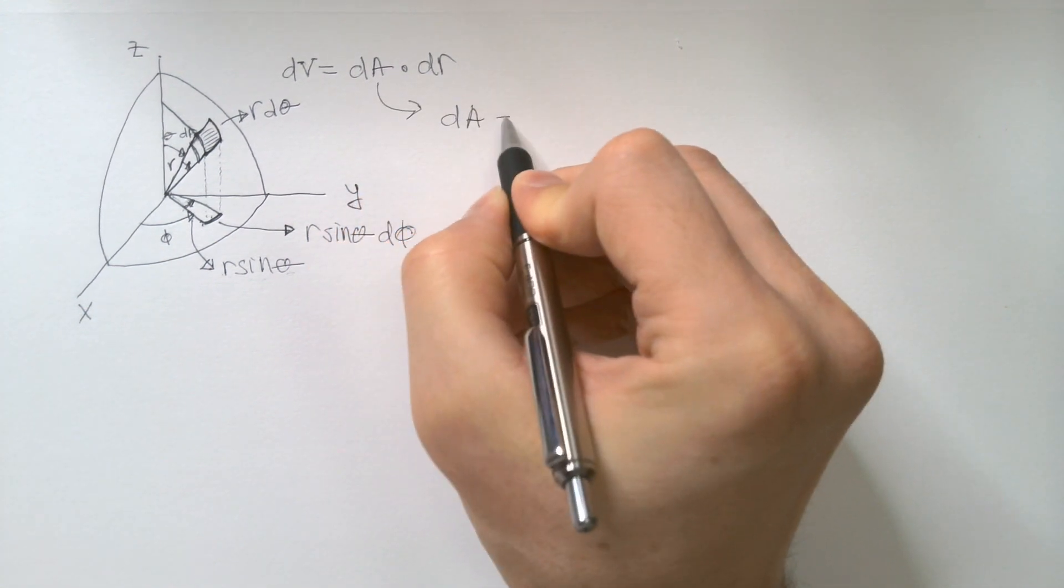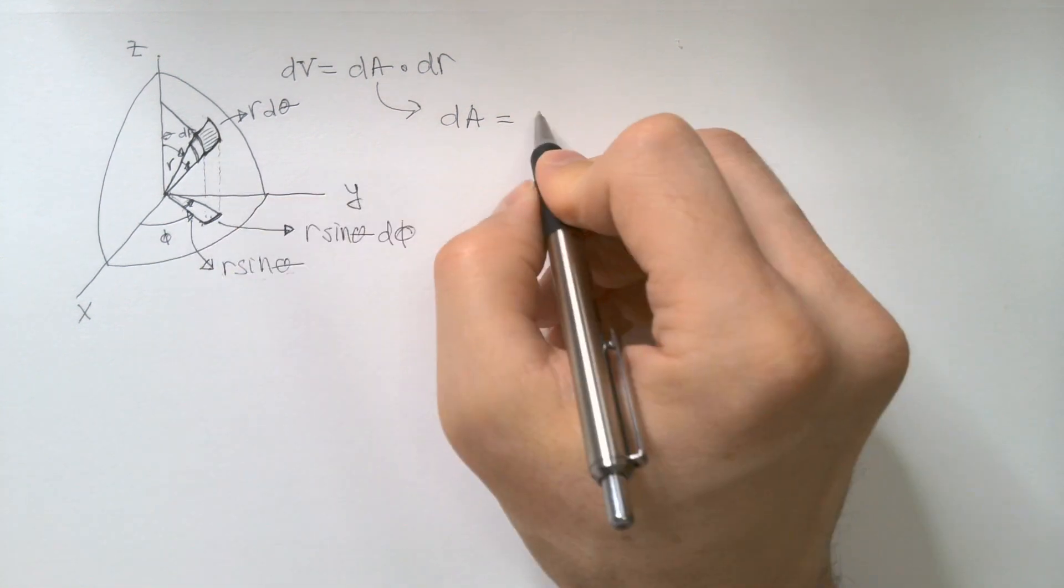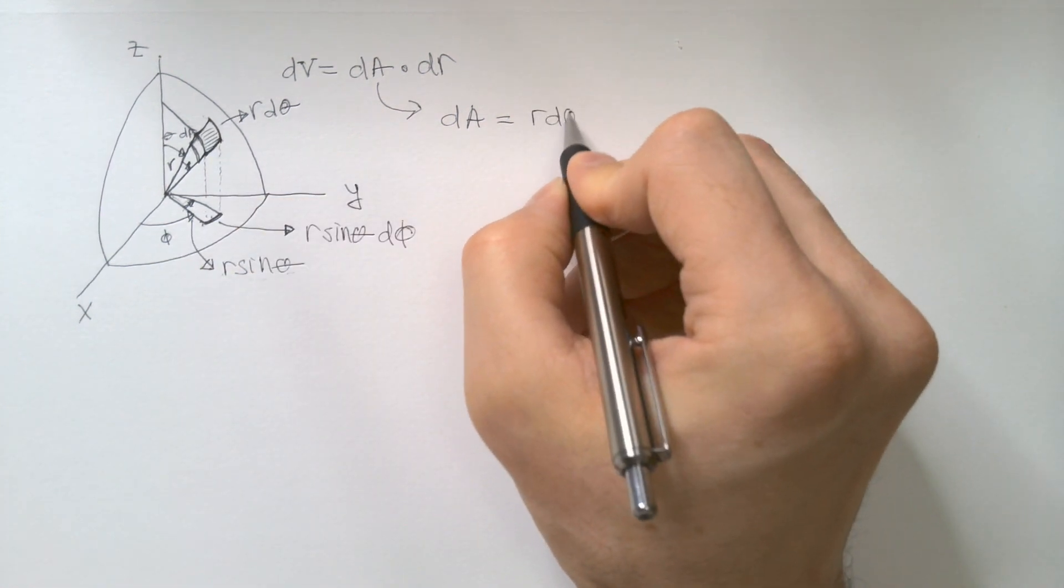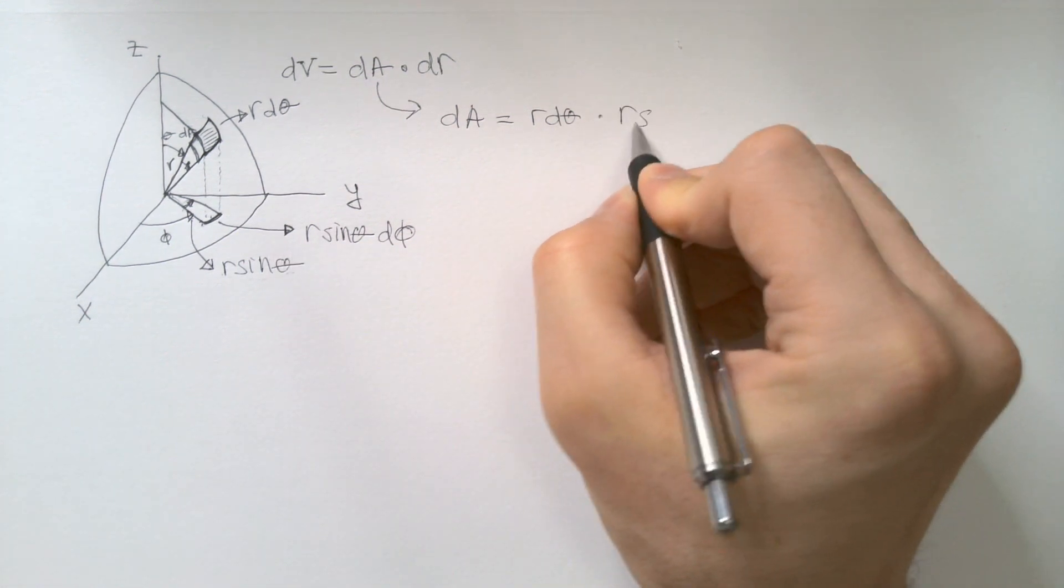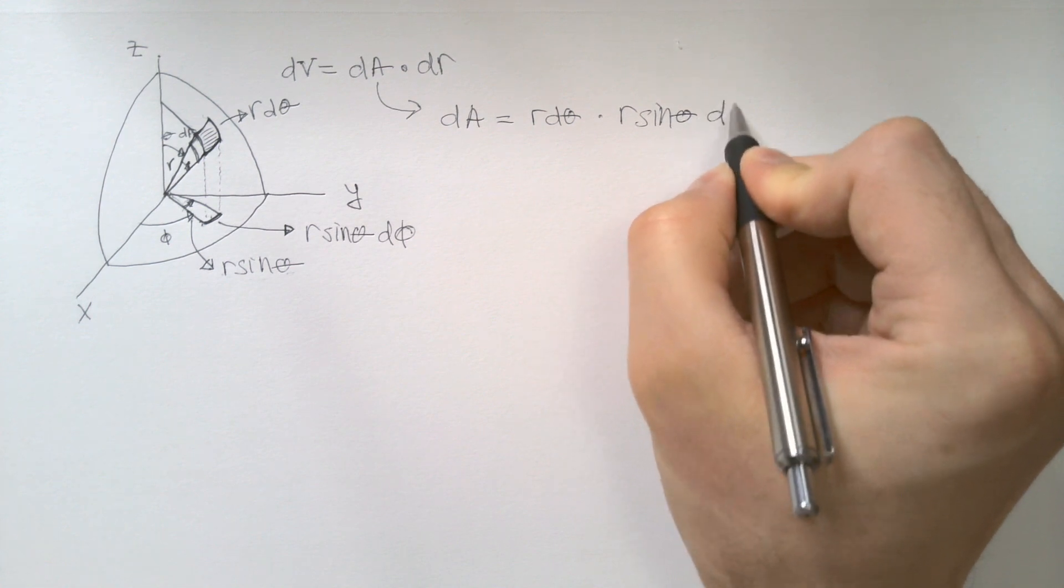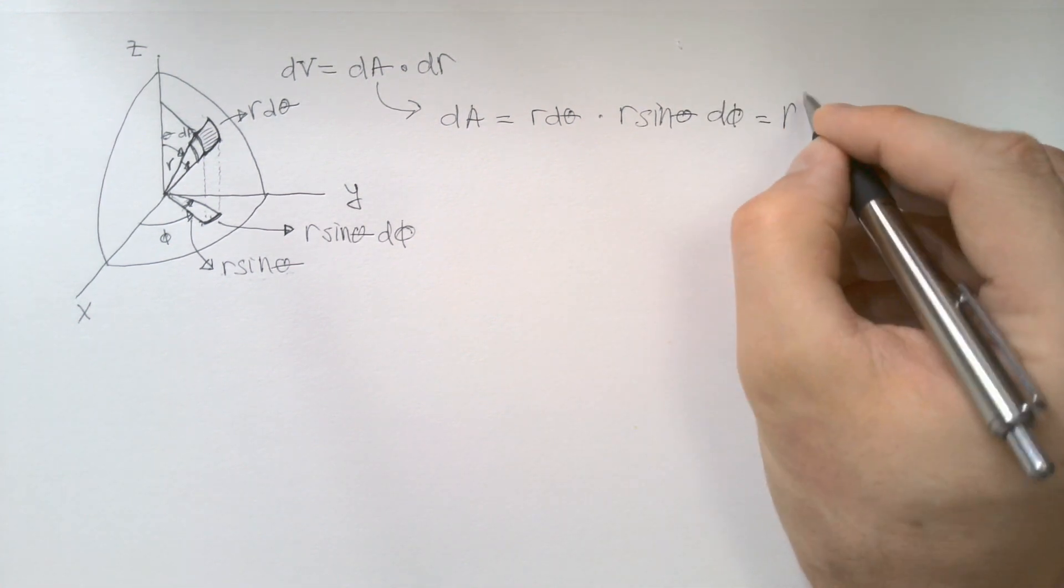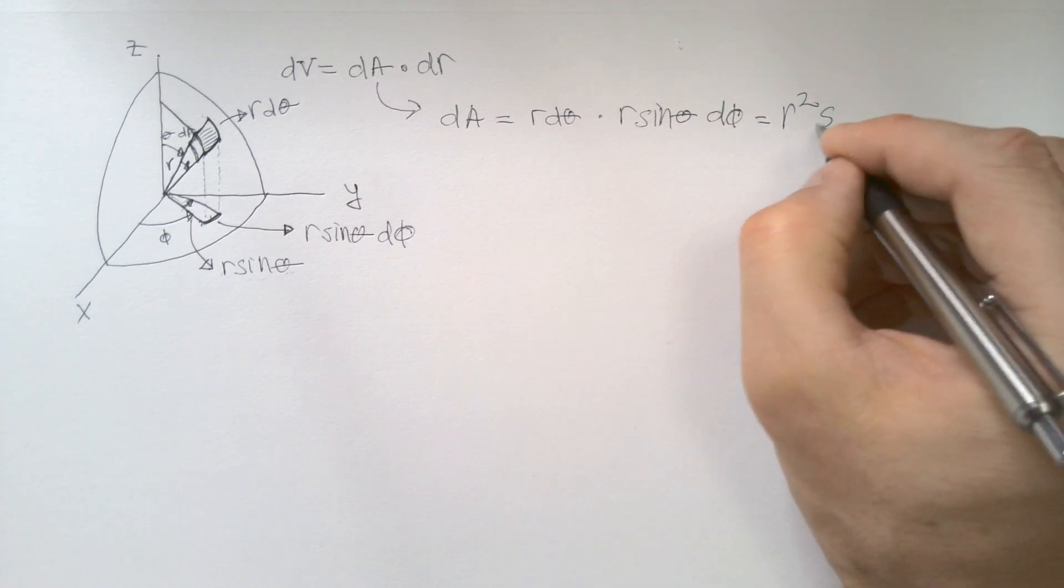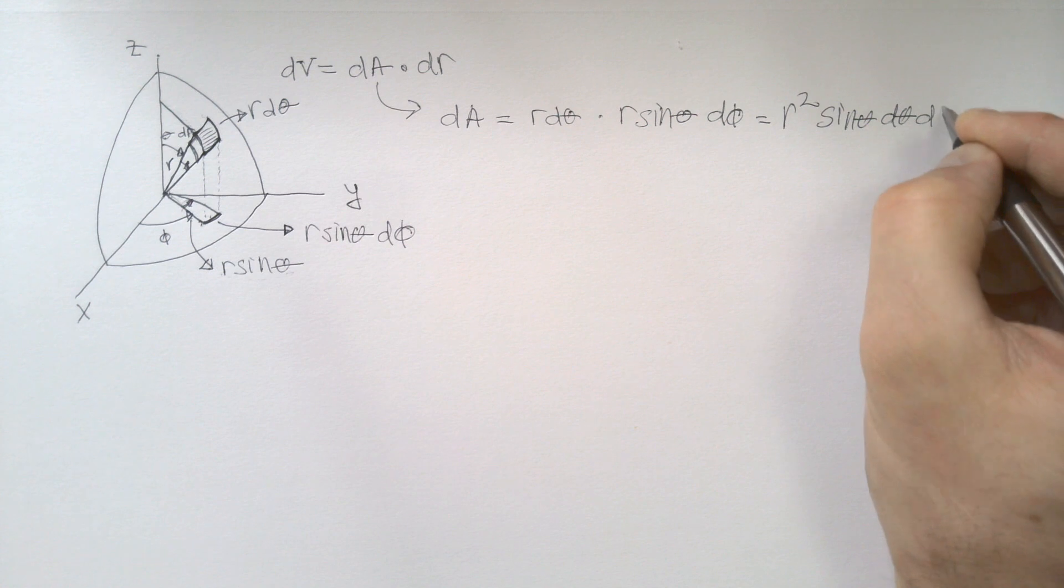Which means that this dA is equal this times this, and that is r dθ times r sinθ dφ, or that is further equal r squared sinθ dθ dφ.